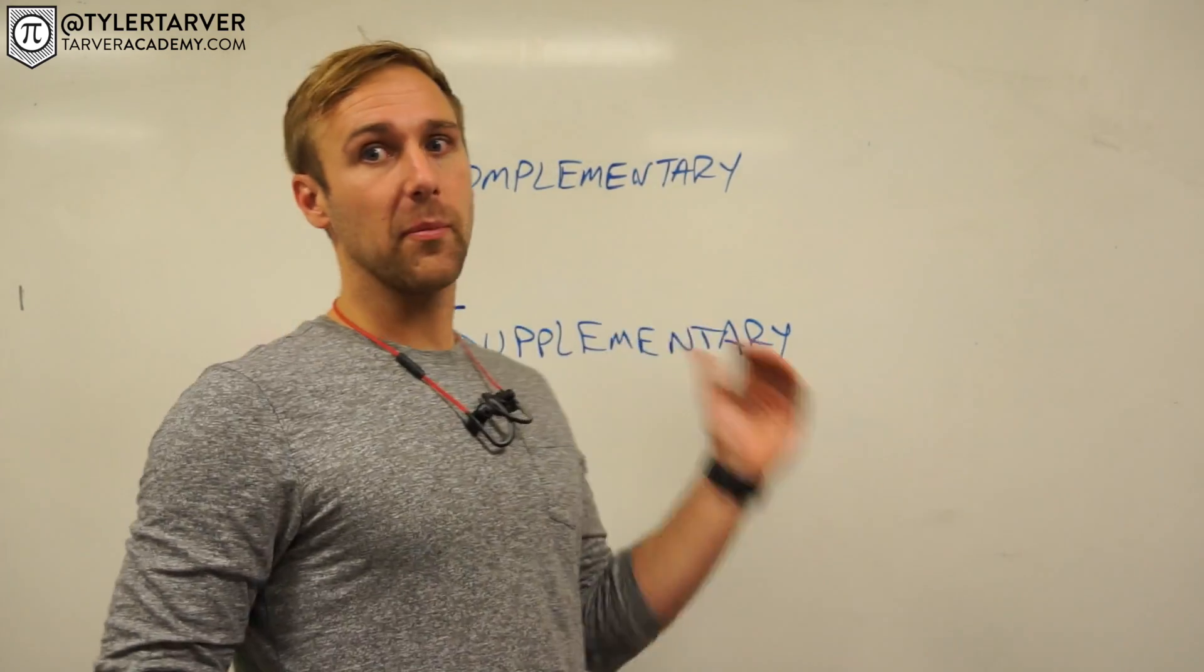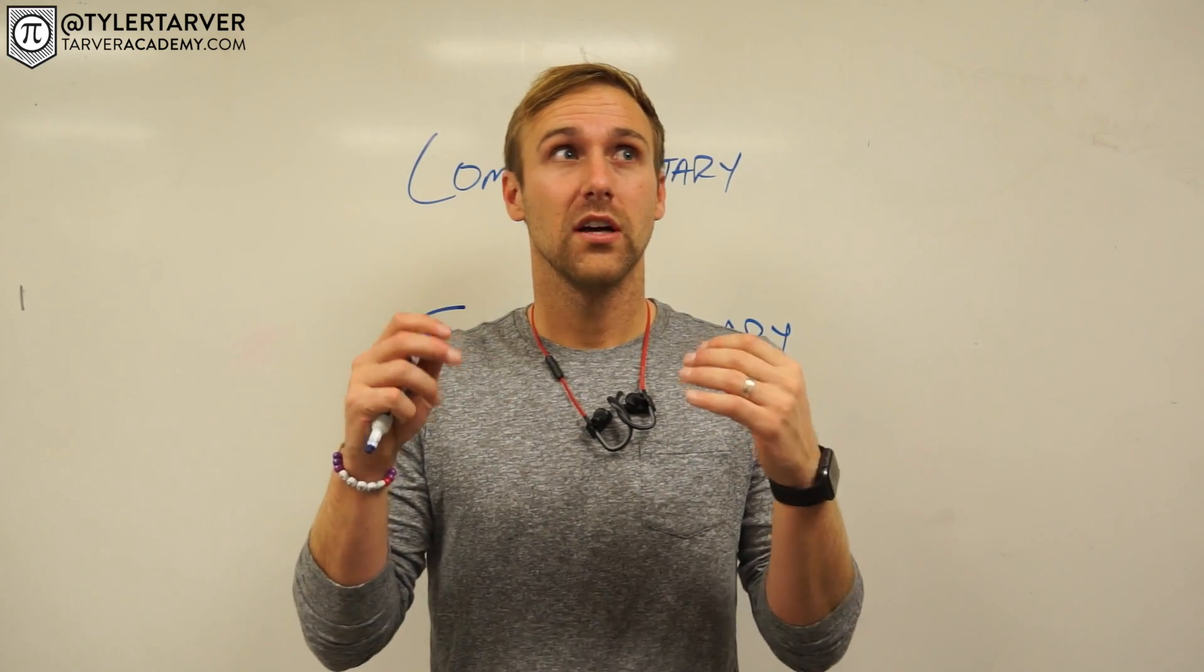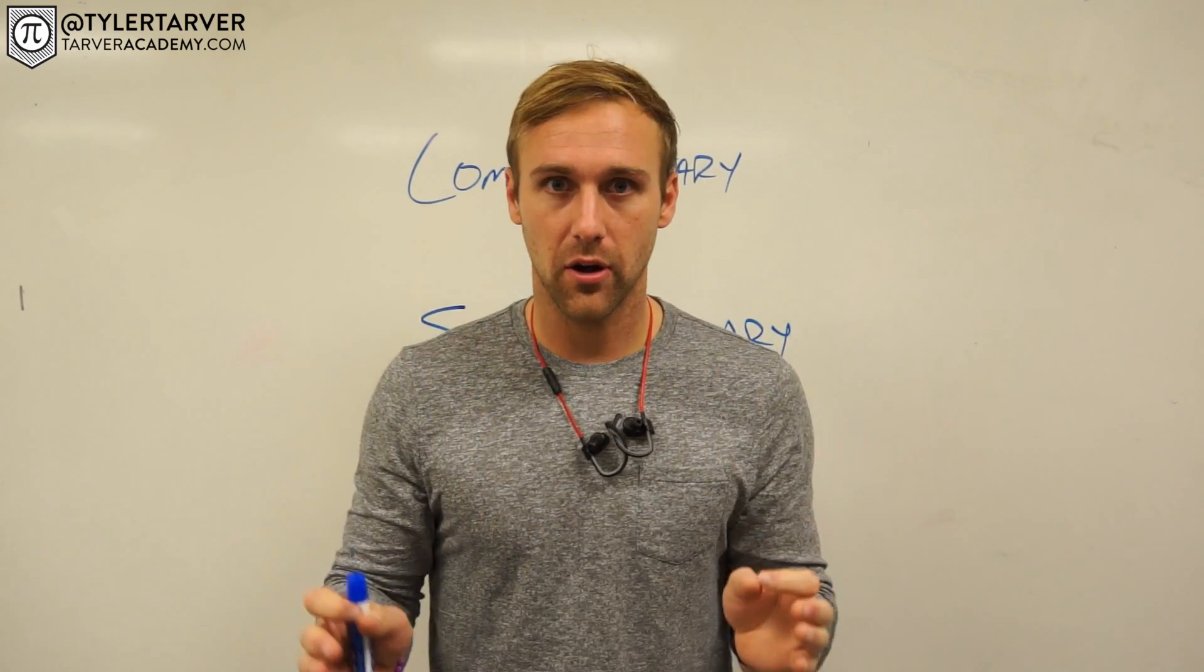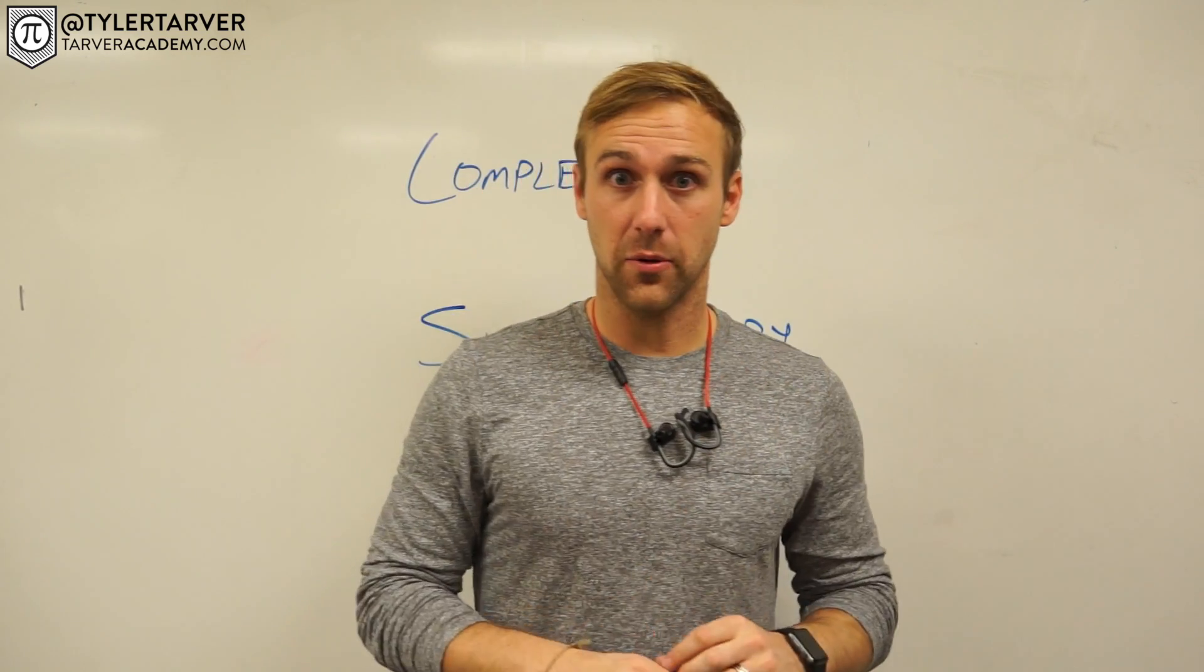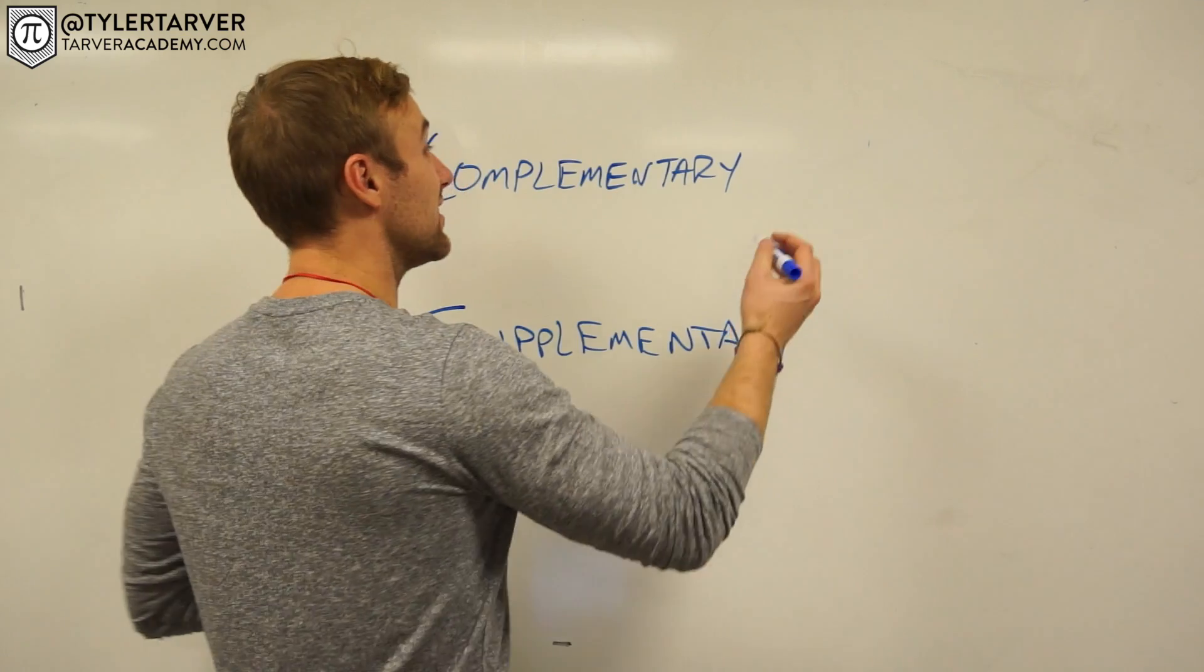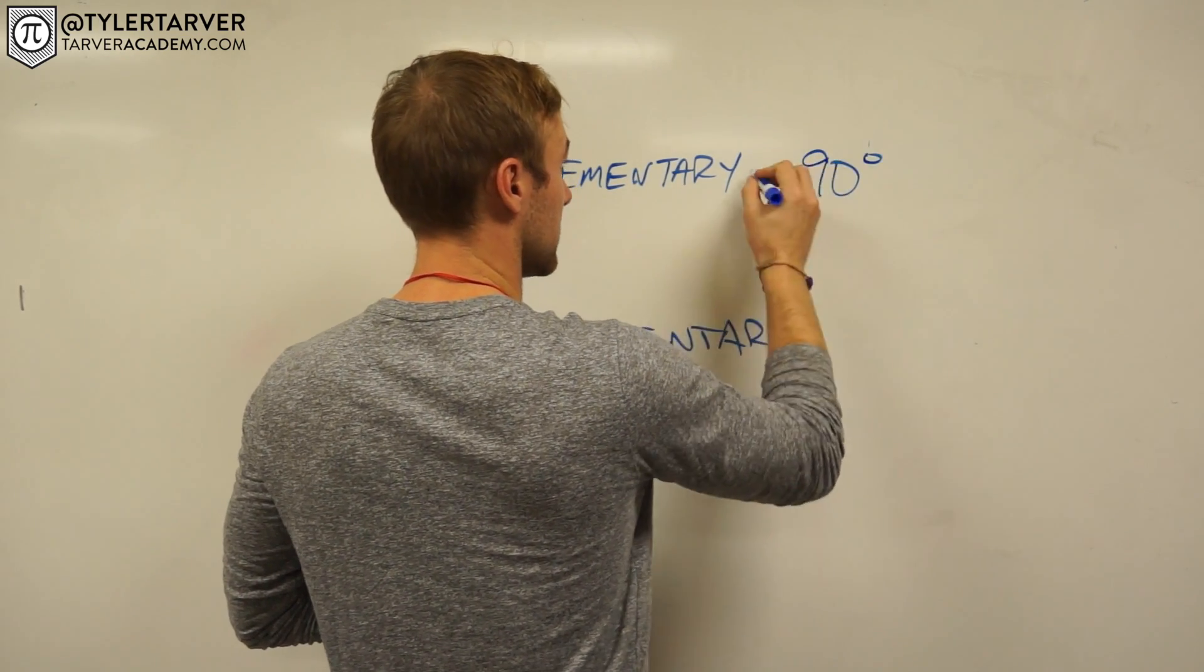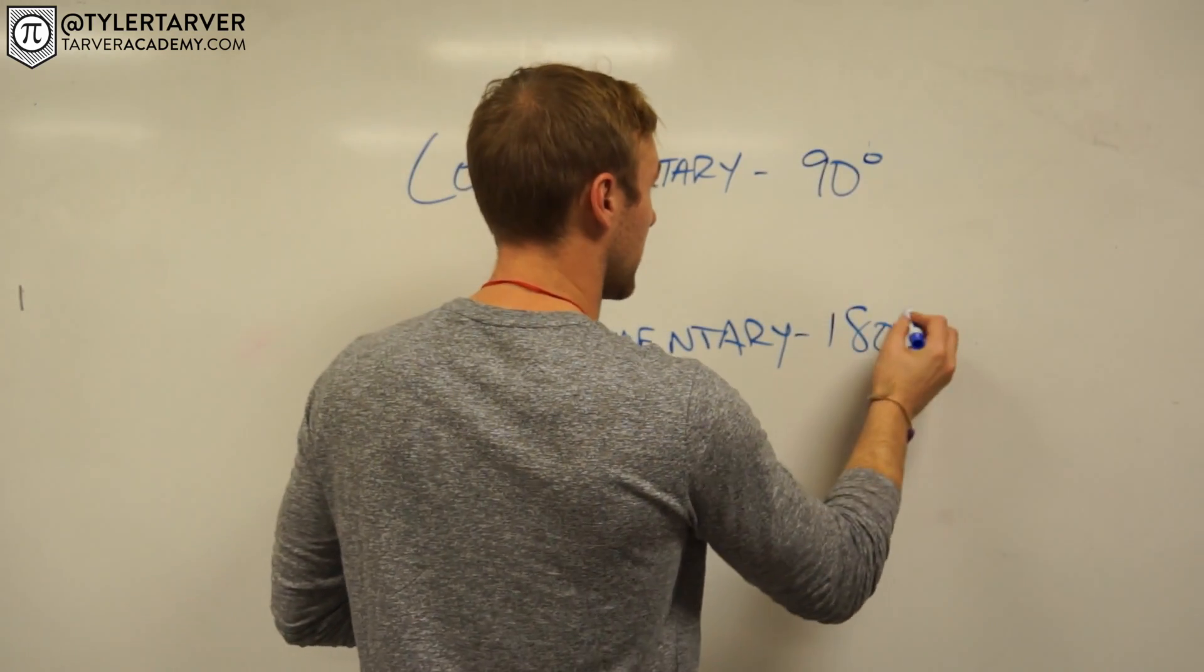Okay, so we're looking at complementary and supplementary angles. I'm going to give you the easiest way to remember and the easiest way to know what they are. I'm not going to give you all the fluff, I'm going to give you the need to know. You ready? Complementary means that these two angles add up to 90 degrees. Supplementary means the angles add up to 180 degrees.